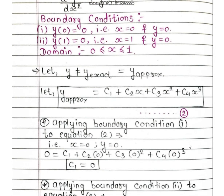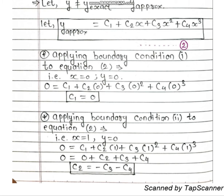The next task is to apply boundary condition 1 and boundary condition 2 to equation number 2. Applying BC1 (x = 0, y = 0) gives c1 = 0. Applying BC2 (x = 1, y = 0) to equation number 2 and simplifying gives c2 = −c3 − c4.